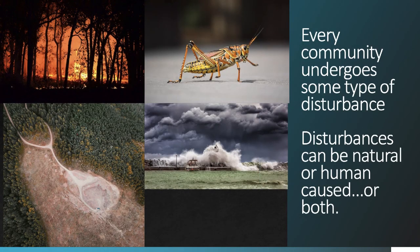When we talk about disturbance we're talking about events that lead to a major change in biological communities. There's an extremely long list of things that can cause disturbance, including wildfire, pest outbreaks, flooding, and forest removal in terrestrial ecosystems. In freshwater systems, large reductions in water flow, large floods, or sudden changes in temperature can also have big impacts. Disturbance can be natural, human-caused, or some combination of the two, and it's often this last category.